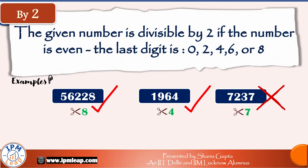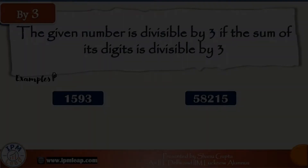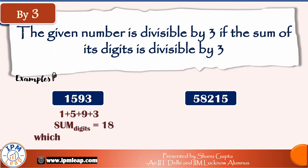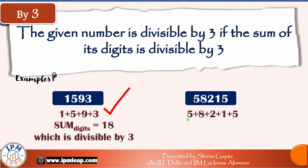The divisibility rule for 3: the given number is divisible by 3 if the sum of its digits is divisible by 3. For example, to check whether 1593 is divisible by 3, we add 1 + 5 + 9 + 3 = 18. Since 18 is divisible by 3, so is 1593. For 58215, the digit sum is 5 + 8 + 2 + 1 + 5 = 21, which is divisible by 3, so 58215 is also divisible by 3.